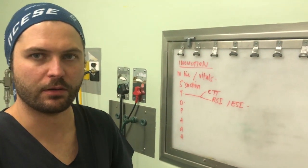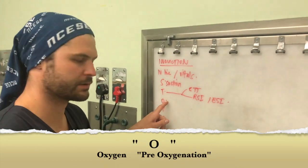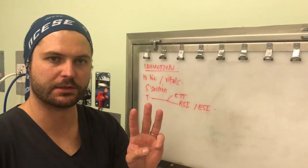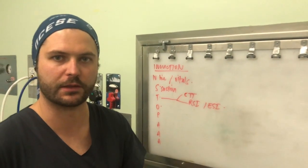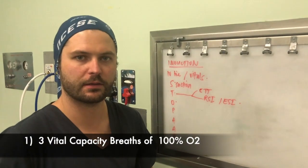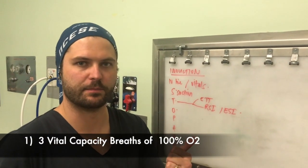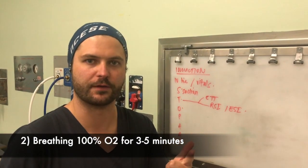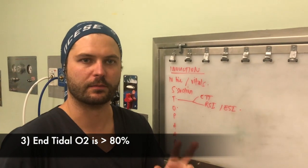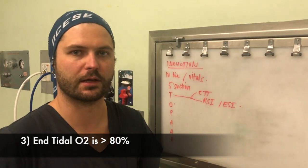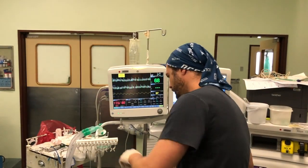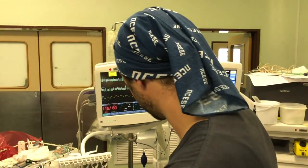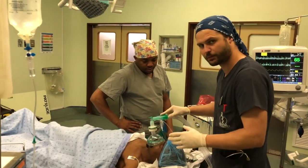The O in STOP stands for oxygen — we need to pre-oxygenate our patients. There are three methods: the first being three vital capacity breaths of 100% oxygen; the second being breathing 100% oxygen for 2 to 5 minutes; and the last being to ensure your end-tidal oxygen is more than 80%. I preset my ventilator and pre-oxygenate with 100% oxygen, holding the mask gently while the patient is awake.